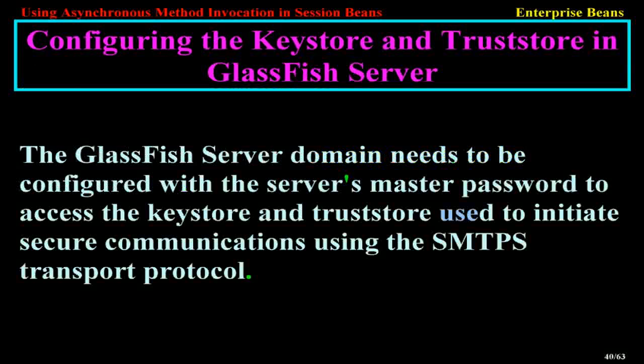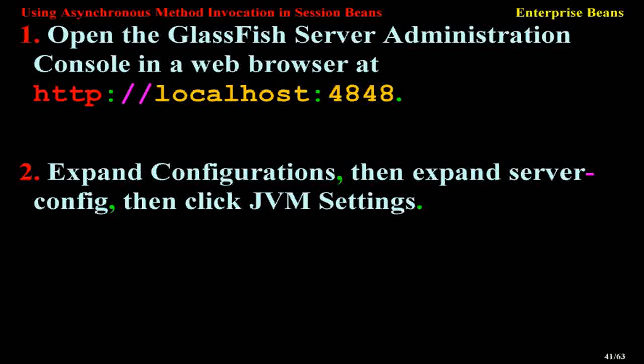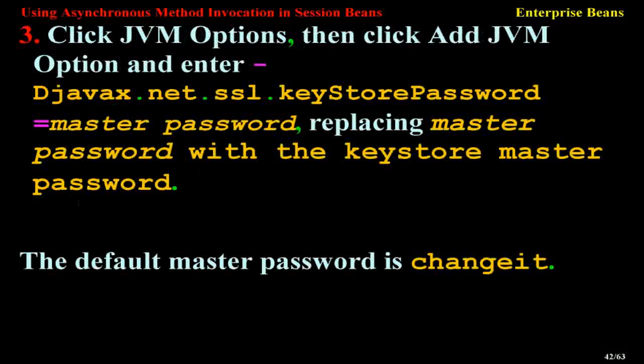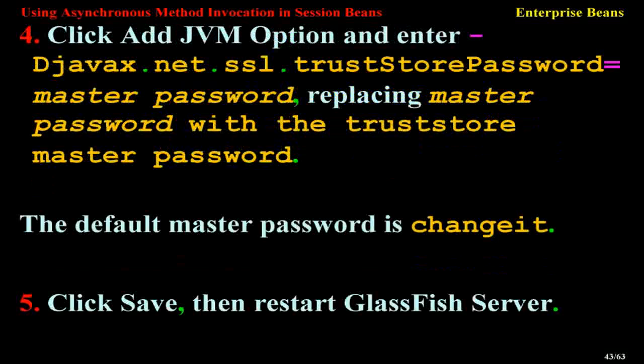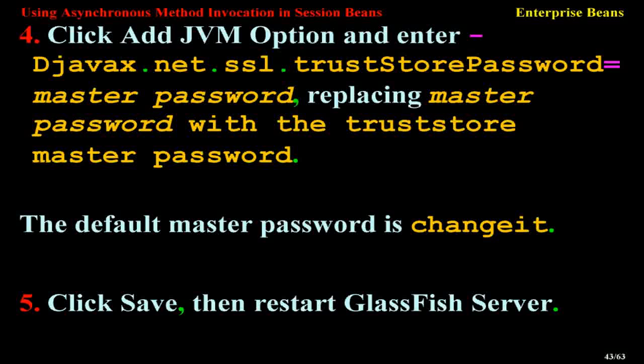Configuring the keystore and truststore in GlassFish Server: the domain needs to be configured with the server's master password to access the keystore and truststore used to initiate secure communications using the SMTPS transport protocol. Open the GlassFish Server Administration Console at http://localhost:4848. Expand Configurations, then Server Config, then click JVM Settings. Click JVM Options, then Add JVM Option and enter -Djavax.net.ssl.keyStorePassword=masterPassword, replacing masterPassword with your keystore master password. The default master password is 'changeit'. Similarly add -Djavax.net.ssl.trustStorePassword=masterPassword, then click Save and restart GlassFish Server.